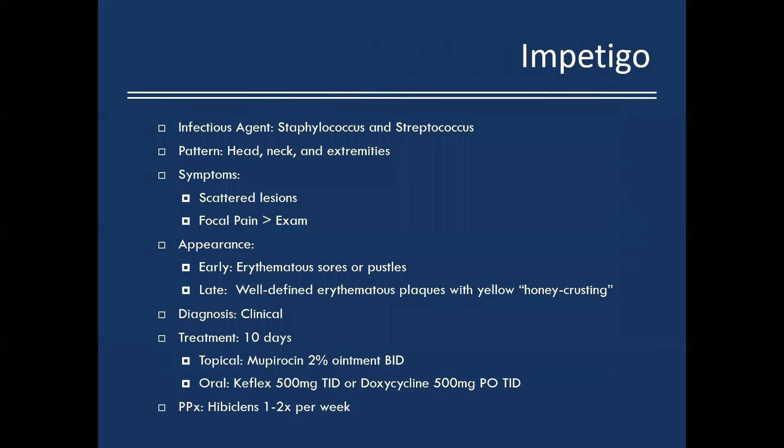Symptoms of impetigo include pain disproportionate to exam — it's an exquisitely painful infection. You have scattered skip or island lesions. Early: erythematous sores or pustules. Later: classic well-defined erythematous plaques with yellow honey crusting. This is a clinical diagnosis and responds very well if caught early with topical mupirocin ointment BID. For more systemic cases or those involving the face, treat more aggressively with oral agents — Keflex TID or doxycycline TID.